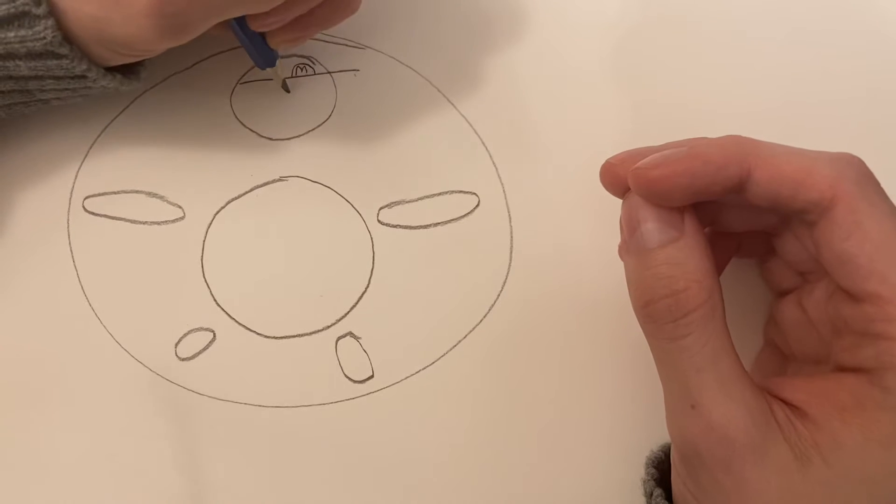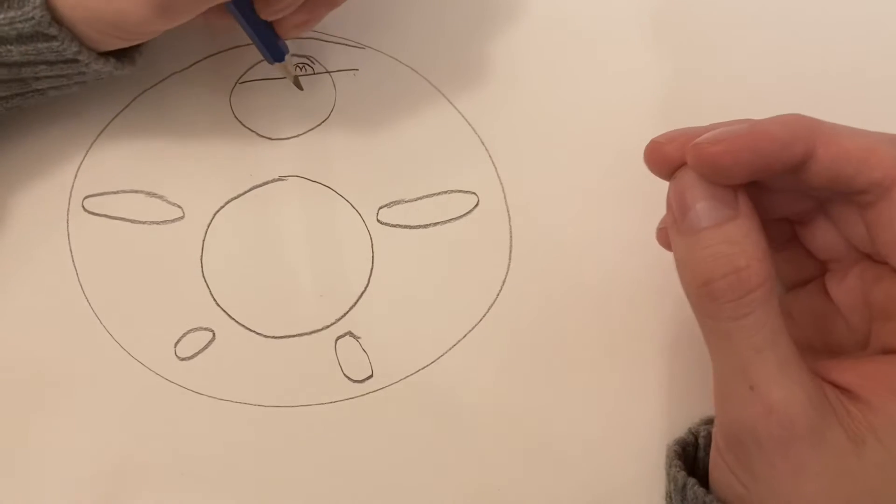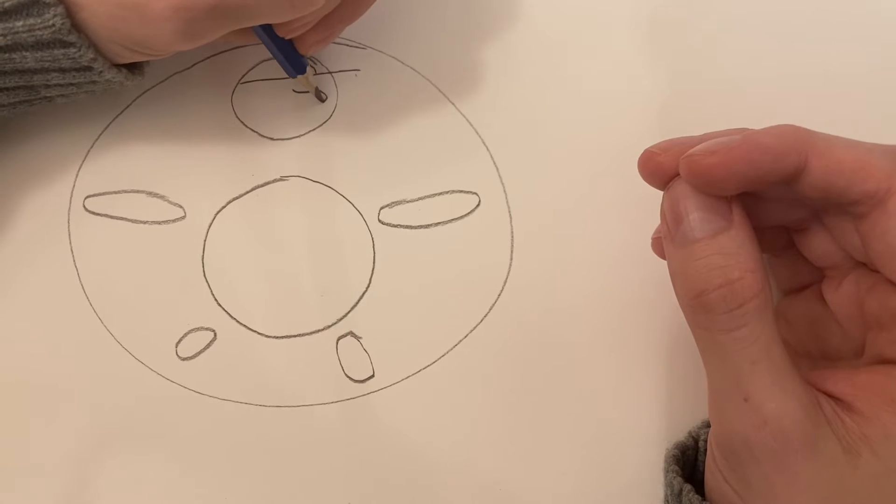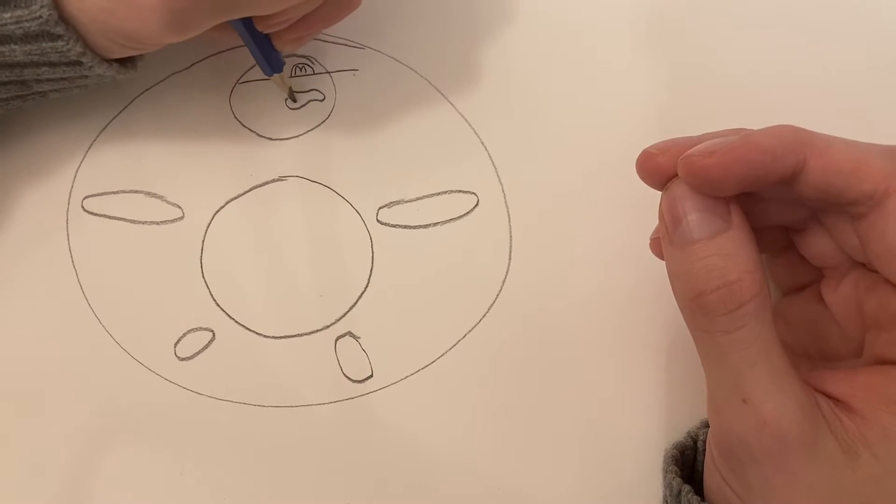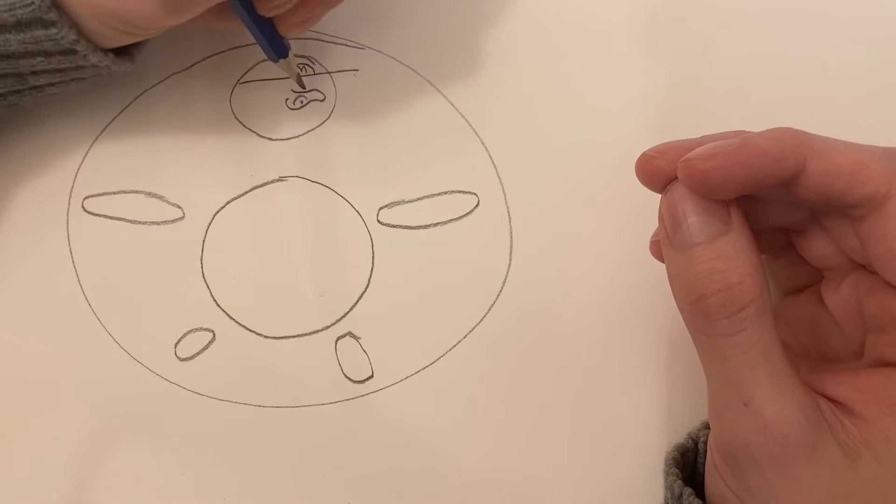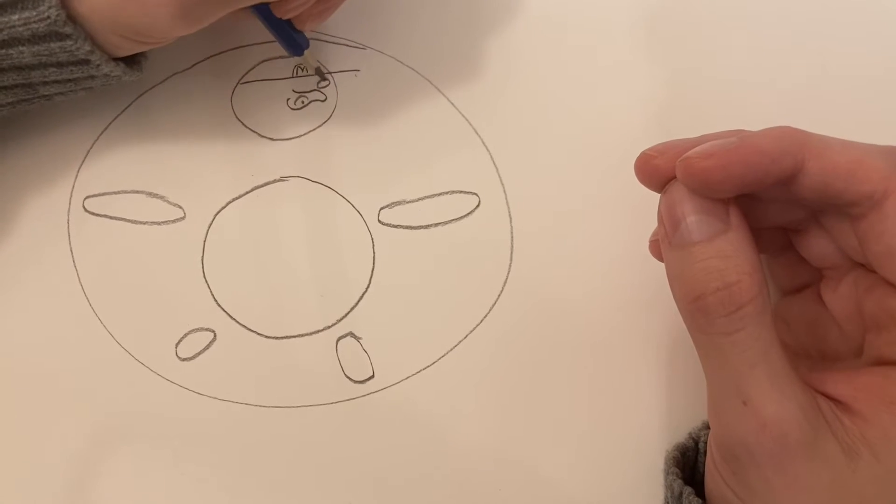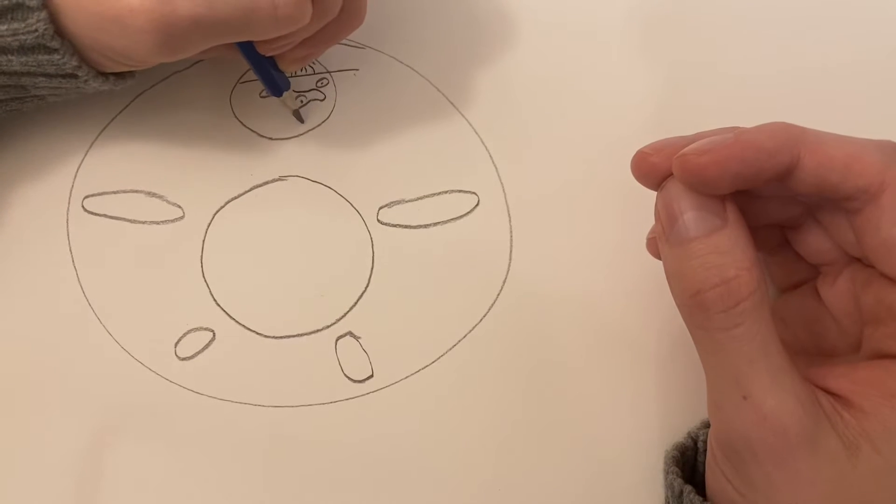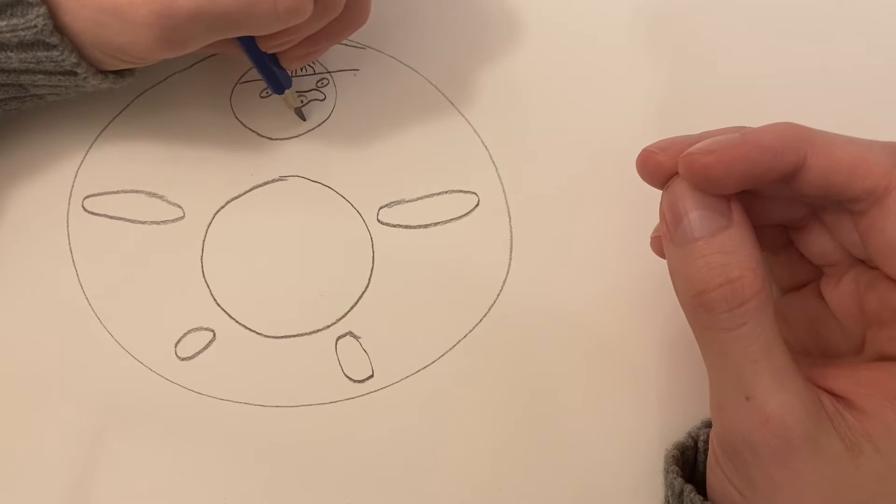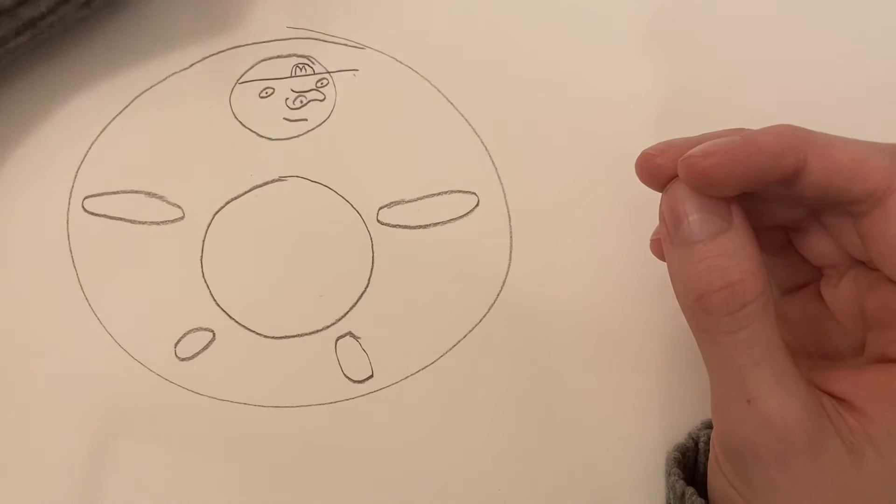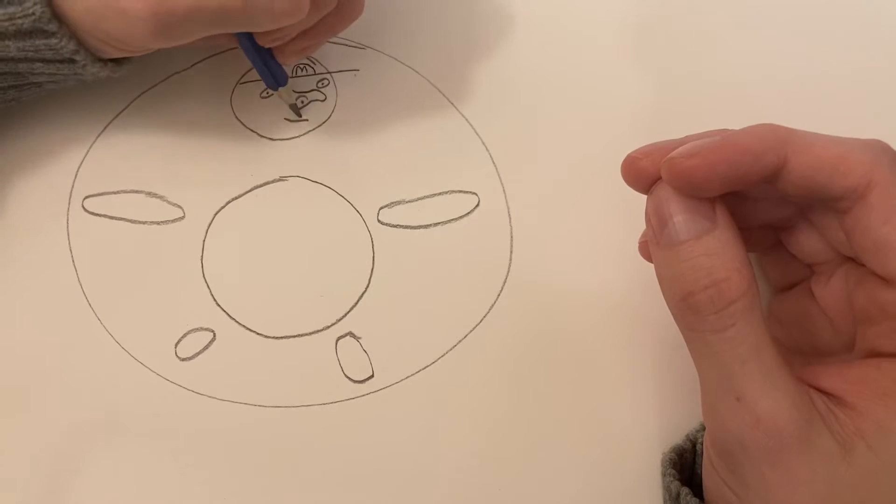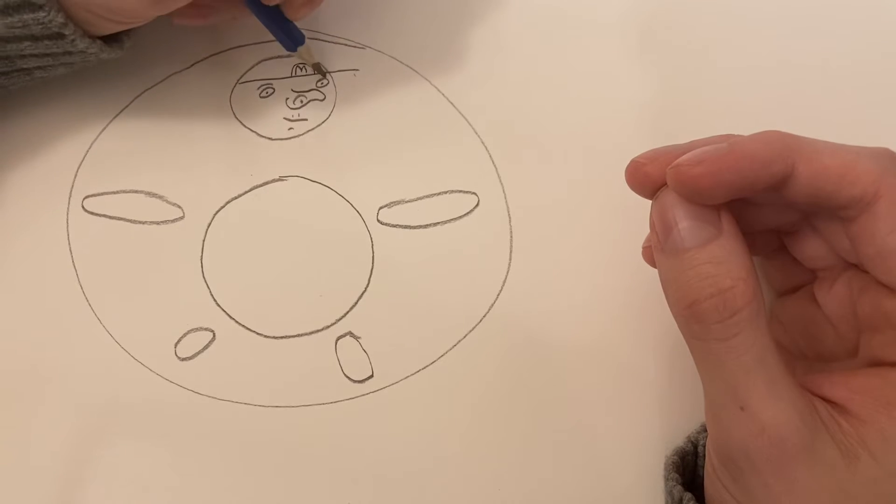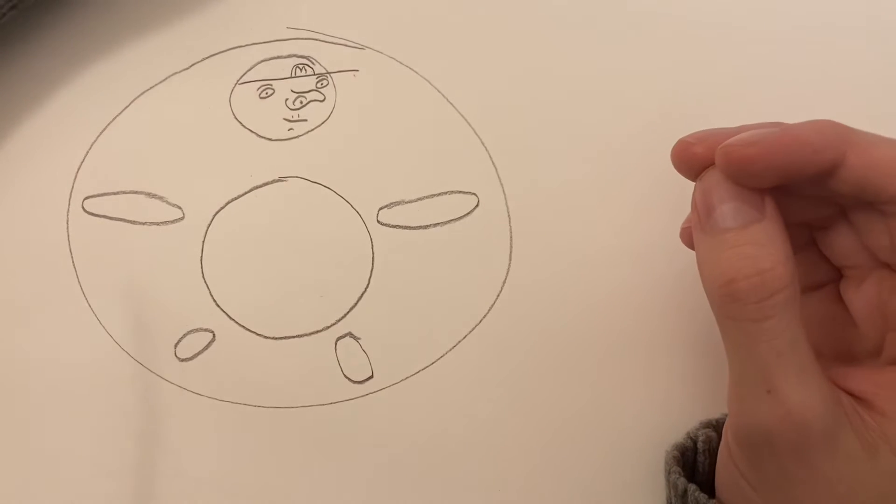Okay, now the next thing you want to do is put a face. So Mario is known for his large nose. And he has two eyes, and he is also well known for his smile.